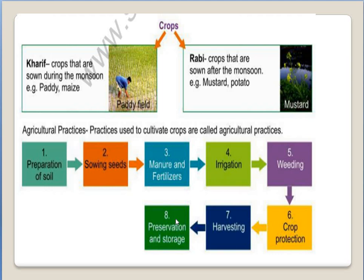That is all we have to study in this crop part. The second part of improvement in food resources is animal husbandry, which we will take up in the next class. Thank you.